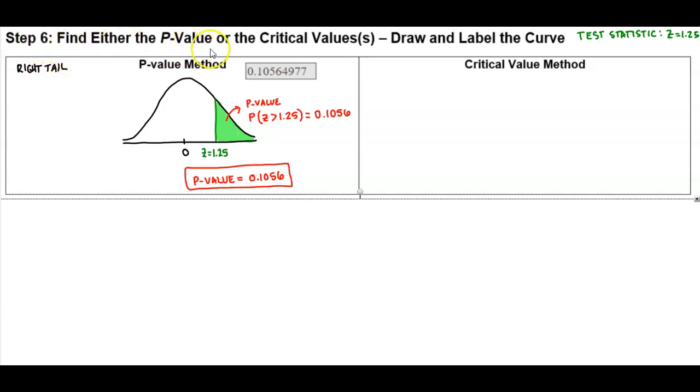In step six we find either the p-value or the critical values. We want to draw and label the curve given that the test statistic in step five was z equals 1.25. So we found the p-value, now we're going to do the critical value method.